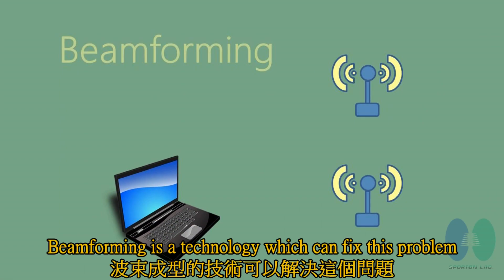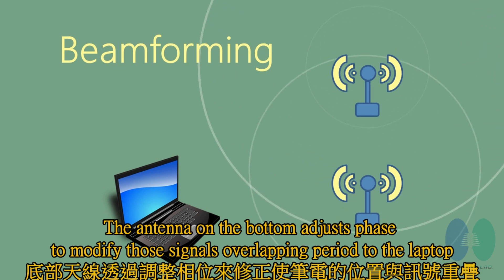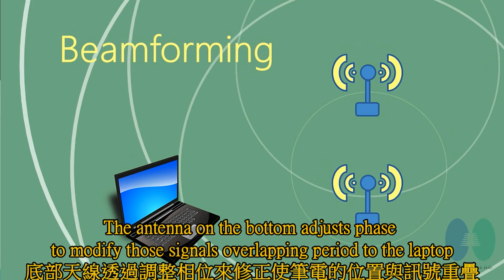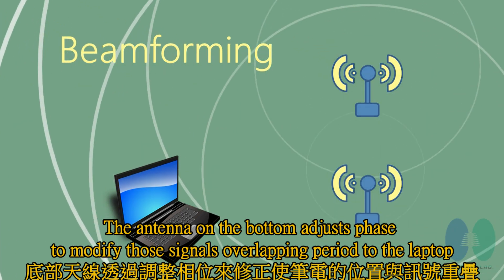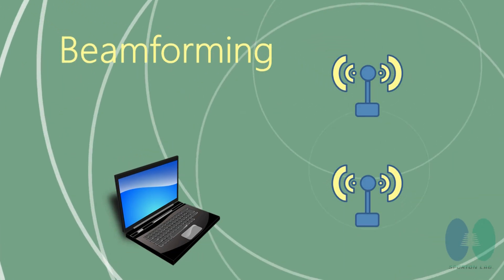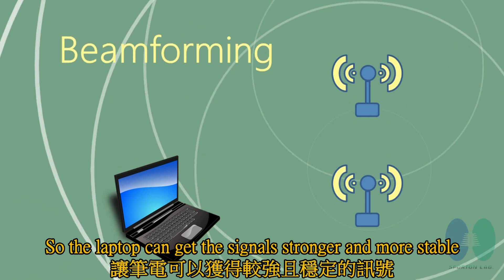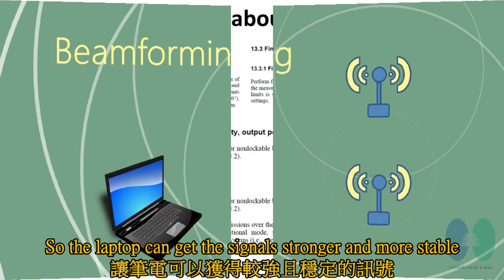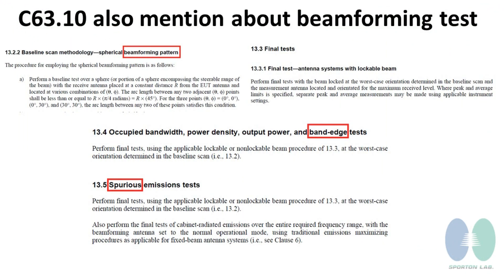Beamforming is a technology which can fix this problem. The antenna adjusts phase to modify those signals toward the target device to the laptop, so the laptop can get the signal stronger and more stable. C63.10 also mentions beamforming testing.